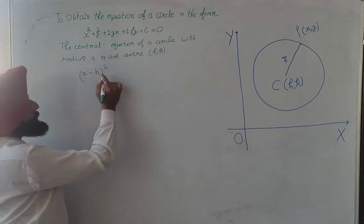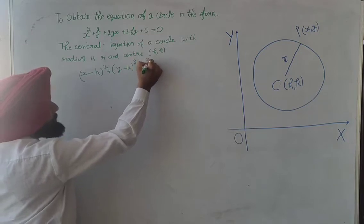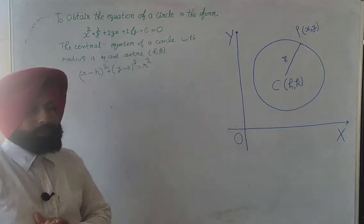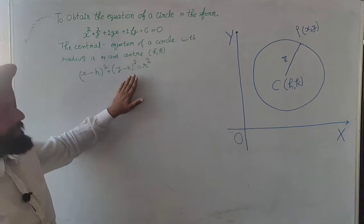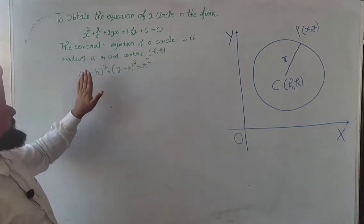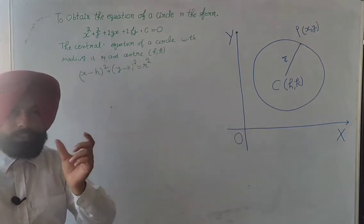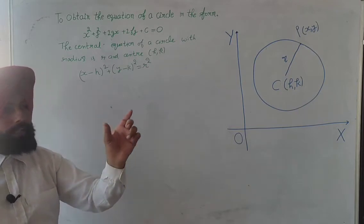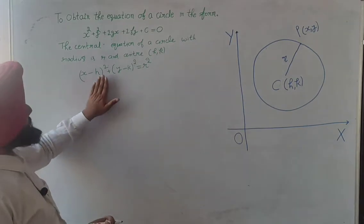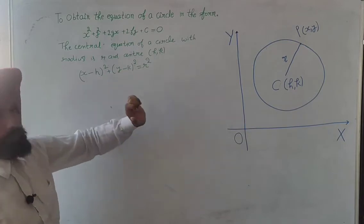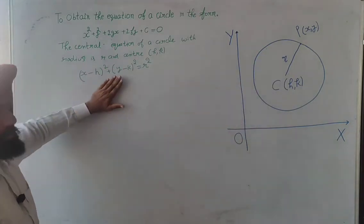x minus h whole square plus y minus k whole square equals r square. We have two forms: standard form and central form. If the center is at the origin, the equation is x square plus y square equal to r square. If the center is at any coordinate, the equation is x minus h square plus y minus k square equal to r square.